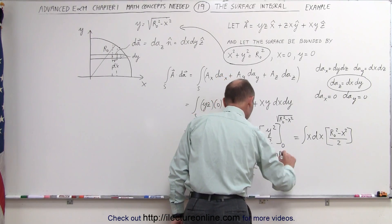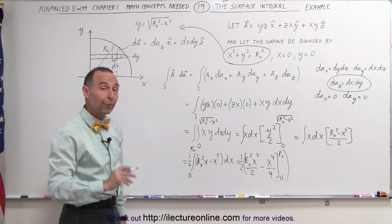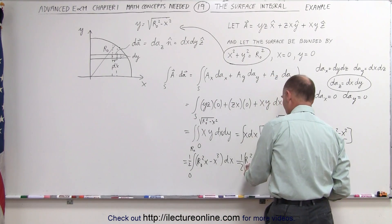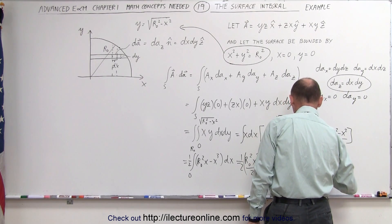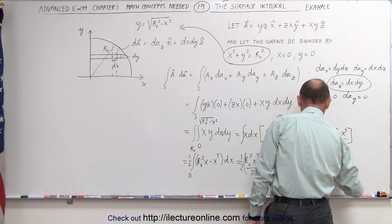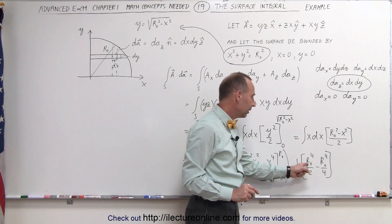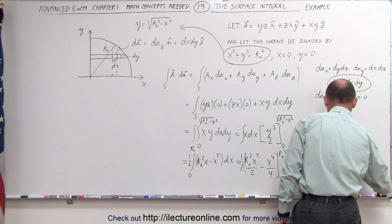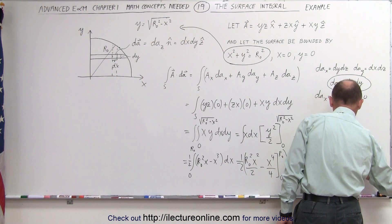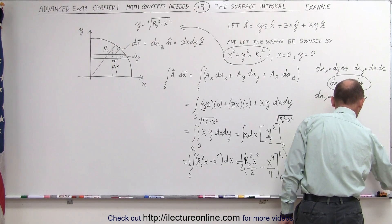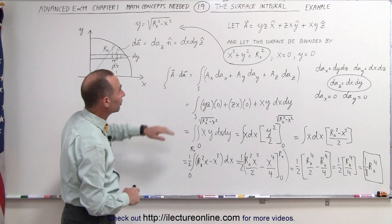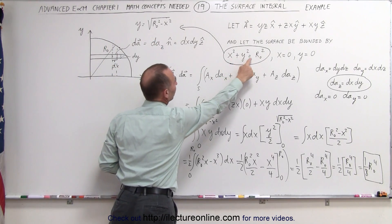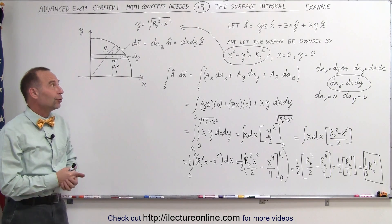I also need the one-half factor in front. Evaluating: when I plug in the lower limit of 0, I get nothing. Plugging in the upper limit gives one-half times r-sub-naught squared times r-sub-naught squared over 2, minus r-sub-naught to the fourth over 4. Subtracting r to the fourth over 2 minus r to the fourth over 4 gives one-half times r-sub-naught to the fourth over 4, which means the final answer is one-eighth r-sub-naught to the fourth power. That is the surface integral of the vector field over the surface in the xy plane defined by x squared plus y squared equals r-sub-naught squared. This is a nice example of how to do surface integrals.